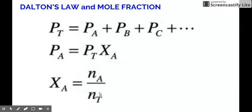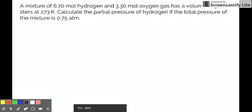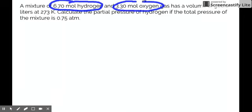Now let's solve two problems related to Dalton's law and also with the inclusion of mole fraction, and then let me show you how to attack the problem properly. So let's start with this. You have a mixture of 6.70 moles of hydrogen and you also have 3.30 moles of oxygen gas, so that's H2 and O2, they're two diatomic, and it has a volume of 300 liters at 273 Kelvin. Calculate the partial pressure of hydrogen if the total pressure of the mixture is 0.75 atmosphere.